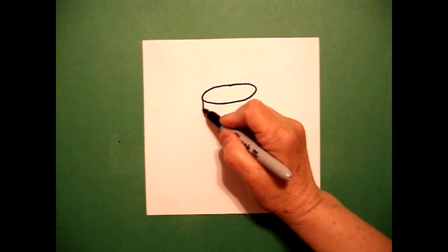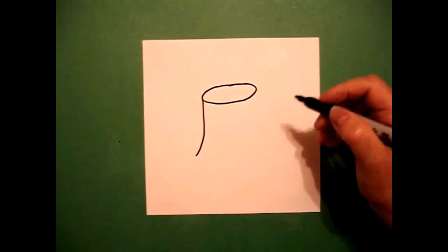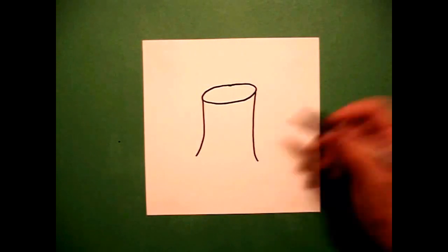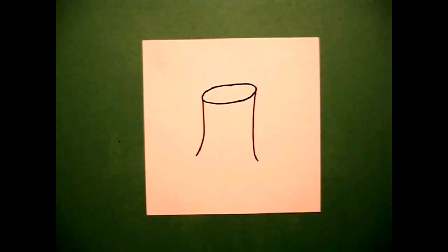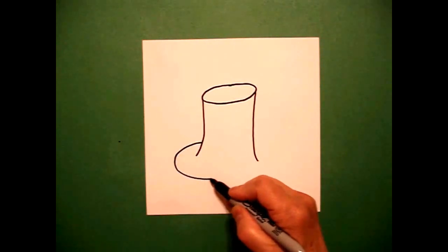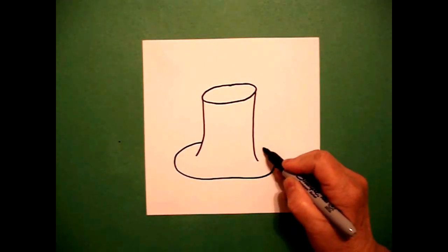On the left-hand side, I draw a slightly curved line down. On the right-hand side, a slightly curved line down. I come about mid-point and I'm going to draw a curved line.